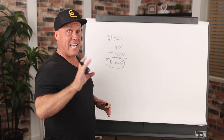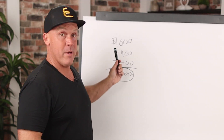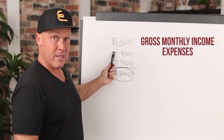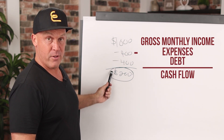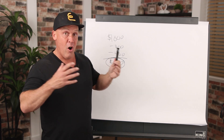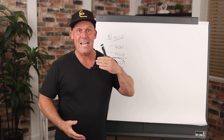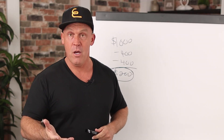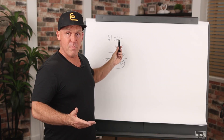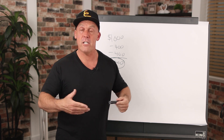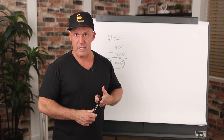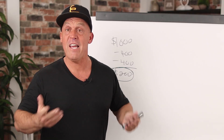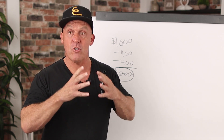Let's look at how to actually calculate cash flow. First, determine the gross monthly income from the property. Then subtract the expenses. Then subtract the debt. That leaves you with the cash flow. The gross total income is all income a property generates before any expenses or debt service are deducted. Some properties like a single-family will only have one source of income — the rent. But commercial properties can have additional streams like laundry facilities, pet fees, late fees, storage fees, or appliance rentals. All of those make up a property's gross income.